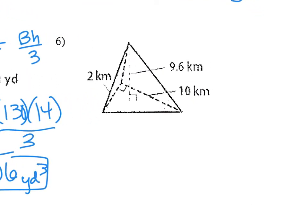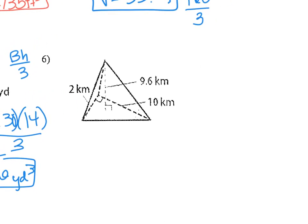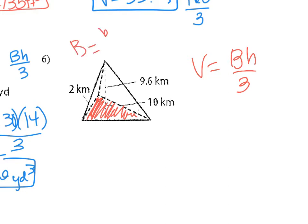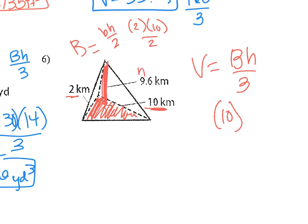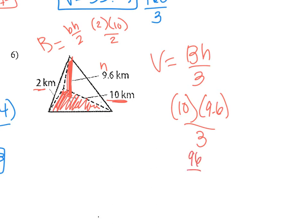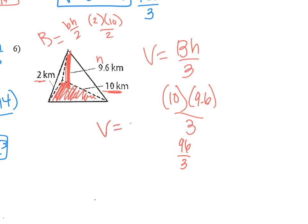Last one — number 6. Make sure you're doing this one right. Volume equals area of the base times height divided by 3. On this one, the shape of the base is a triangle. So the area of the base is base times height divided by 2. The base of the triangle is 2, the height of the triangle is 10, so 2 times 10 divided by 2 equals 10. Then the height of the whole pyramid is 9.6, divided by 3. 9.6 times 10 is 96, divided by 3 gives 32.